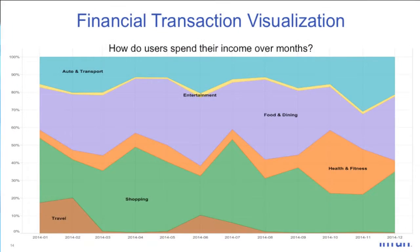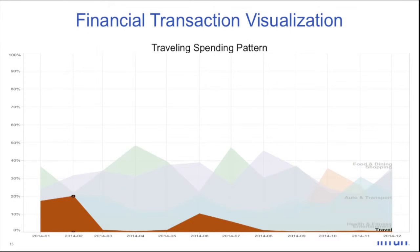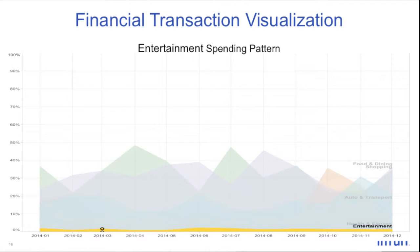The first example is time series visualization, showing how users spent their income over the last year. We can easily see that users spend most of their income on food and dining and shopping. Looking at the travel category, spending spikes in January, February, and June — likely winter and summer vacations for students. The entertainment category tells a different story: the trend is very consistent throughout the year, which makes sense since many people have subscriptions for newspapers, magazines, and services like Netflix.